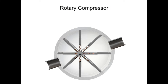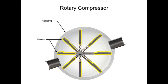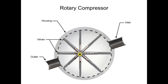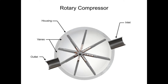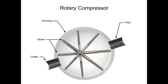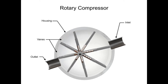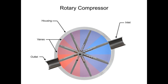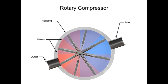Rotary compressors typically consist of a cylindrical housing with adjustable rotary vanes, an inlet, and an outlet. The vanes are on an off-center drive shaft. As the shaft rotates, the vanes slide in and out to maintain contact with a cylindrical compressor wall. As they do, they create chambers within the cylinder of varying sizes.